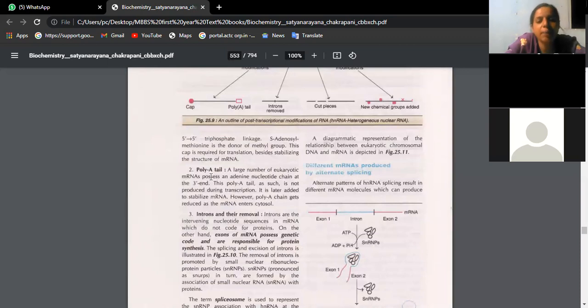Then poly-A tail. Large number of eukaryotic mRNAs possess adenine nucleotide chain at three prime end. That is tail end. The poly-A tail, generally this tail will be present as long as mRNA is present in the nucleus. Once it is moving into the cytoplasm, this tail also will disappear.